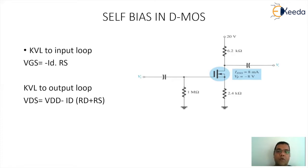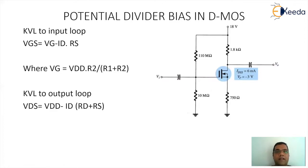An important aspect of the device — whether D-MOSFET or E-MOSFET — is that whatever the drain current is, the same is going to be the source current. This feature was also seen in FET devices. The next arrangement for D-MOSFET is potential divider bias. The methodology of solving remains similar to what we have used in BJT circuits, where the input section gets replaced by the Thevenin equivalent circuitry.